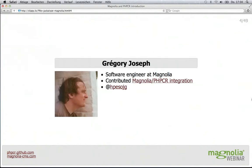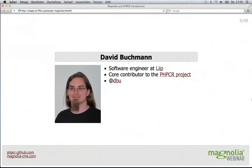I'm Gregory Joseph — I'm a software engineer at Magnolia and I contributed the Magnolia PHPCR module. Our main speaker today is David Buchmann. He will be introducing the PHPCR project, and I think David is going to take it from here.